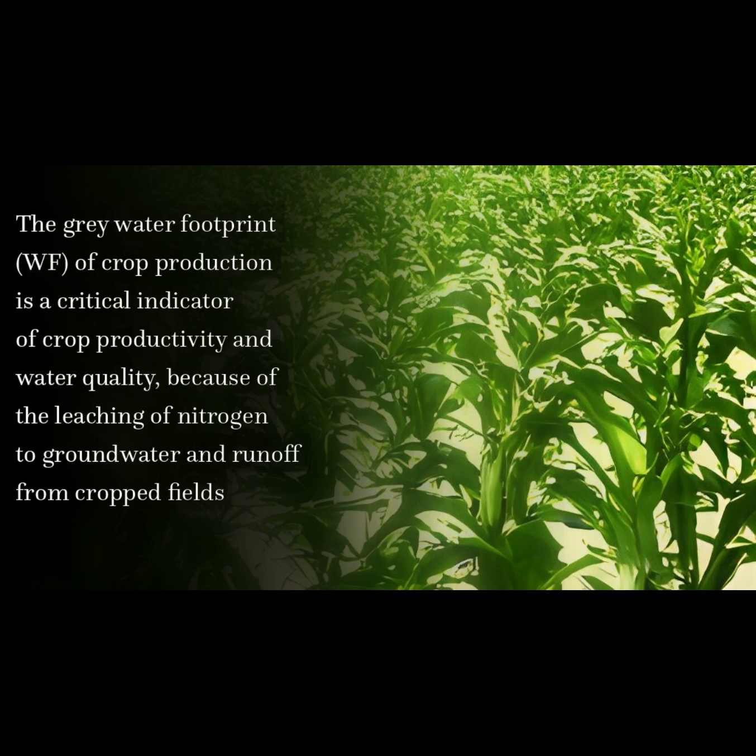The gray water footprint (WF) of crop production is a critical indicator of crop productivity and water quality, because of the leaching of nitrogen to groundwater and runoff from cropped fields.